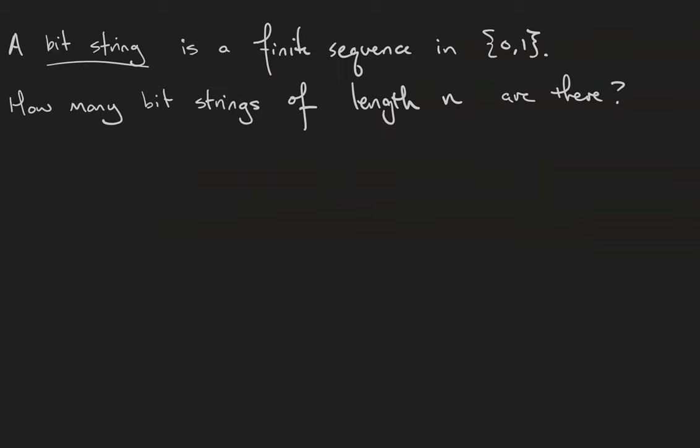We're going to use bit strings as helpful examples for more complicated counting structures. So a bit string is a finite sequence in a set zero one. How many bit strings of length n are there? So we have to be a little careful here. This is not the same n as it was in the definition. n this time is the size of the sample. The size of the underlying set is two, so that means there are going to be two to the n bit strings of length n.